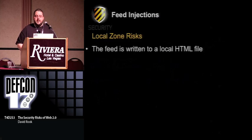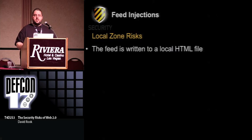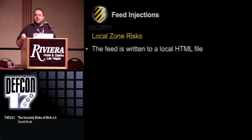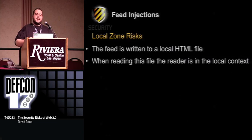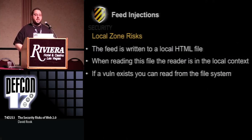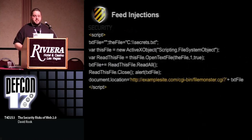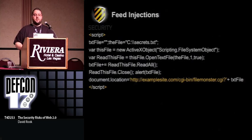The local zone risks are where we have a reader installed on the desktop. That can give an attacker access to read and write content from the file system, and use things like ActiveX components to do a lot of different things. For example, if I injected malicious code into a feed and you came along in your local reader and tried to view it, it could grab a file called secrets.txt using an ActiveX component to take that data out to my filemonster.cgi. When a user clicks on it, they'll get an ActiveX pop-up, and nine times out of ten they'll click yes, allowing you to steal secrets.txt.